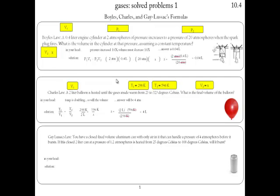Third problem: Gay-Lussac's. You got a fixed volume aluminum can with air in it that can handle the pressure of four atmospheres. That's our original pressure. It's in a two-liter can, but if you follow this through, you'll find that this thing is at a fixed volume. So who cares what that volume is?